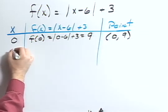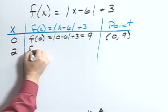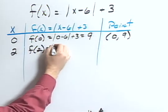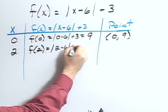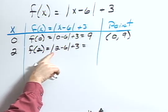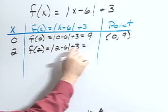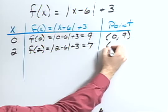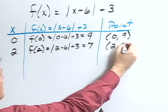If I chose x as 2, then f of 2 would equal the absolute value of 2 minus 6 plus 3. Let's see, 2 minus 6 is negative 4. The absolute value, that's positive 4 plus 3 would be 7. So I would have the coordinate 2, 7.